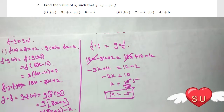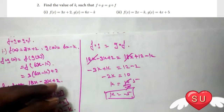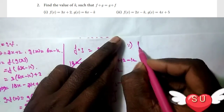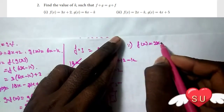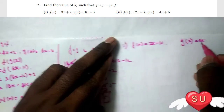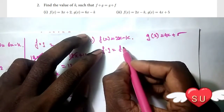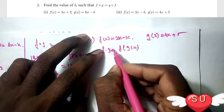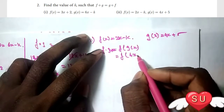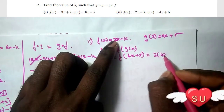Okay. Next, second sum. f of x equals 2x minus k, g of x equals 4x plus 5. Okay. So, f∘g: f of g of x — g of x is 4x plus 5, so f of (4x plus 5).